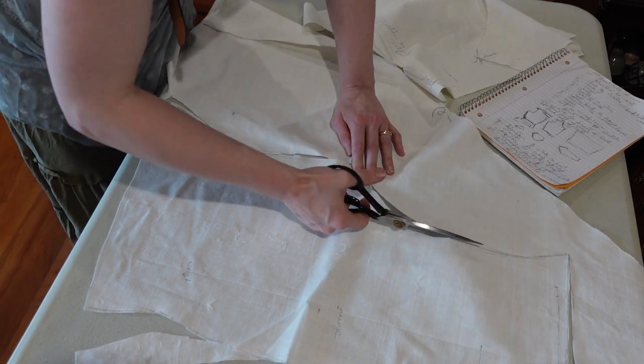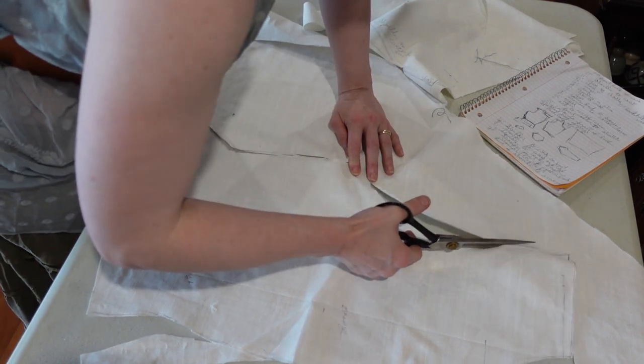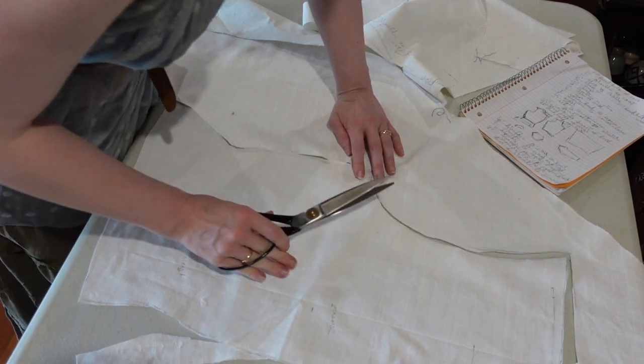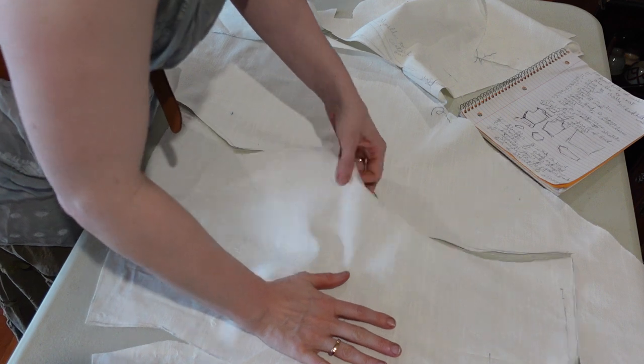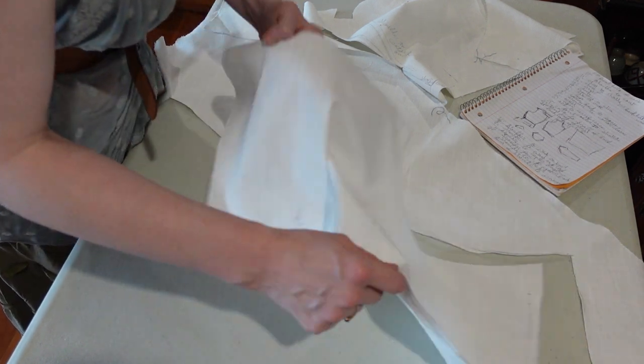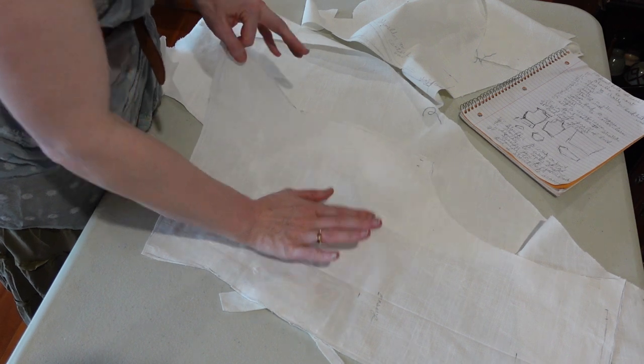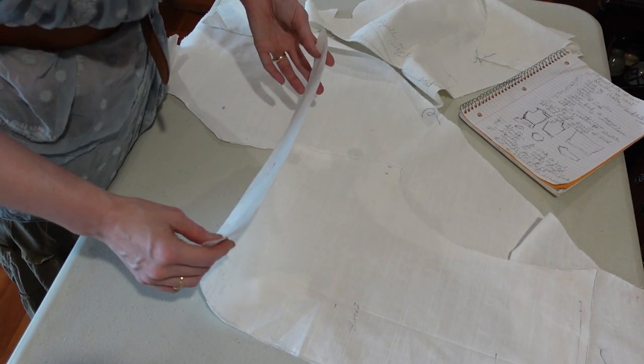So what that meant is that frequently the mock-up was the lining of the garment. Once the lining was fitted, then they would make the finished garment and make any final adjustments. Whereas here I'm working in a fabric that will become, in essence, the pattern for the thing once it's all adjusted.